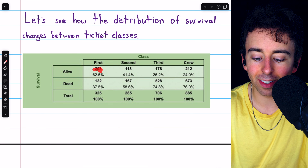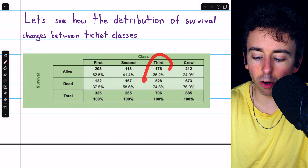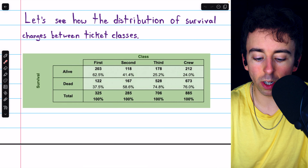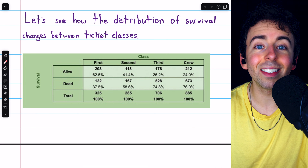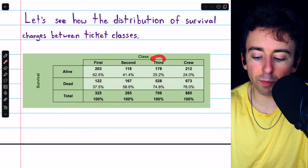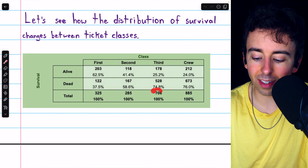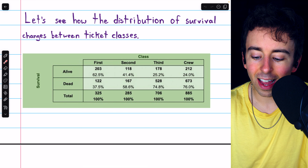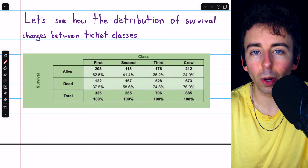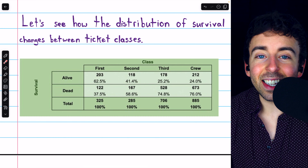Remember how these percents are calculated. Since this is the conditional distribution of survival status given that somebody is in the first class, we would do 203 divided by the total number of people who satisfy the condition of being in first class, 325. That's how we get 62.5%. Similarly, we're looking at the conditional distribution of survival status among people in the third class — the total is 706 — so 528 divided by 706 gives us 74.8%.